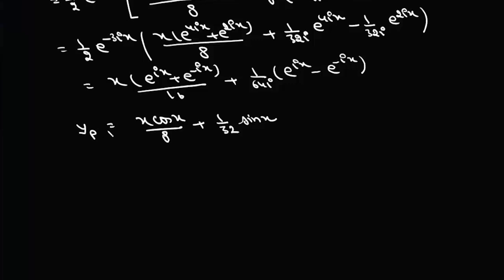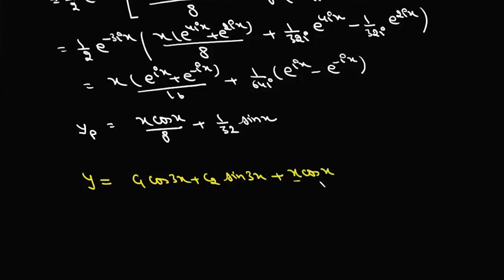Once we have yh and yp, we can write the general solution. yh is c₁·cos(3x) + c₂·sin(3x), plus yp which is x·cos(x)/8 + (1/32)·sin(x). This is how we use this shortcut method.